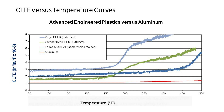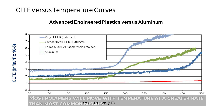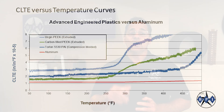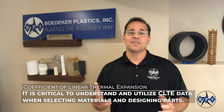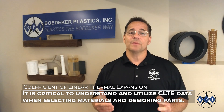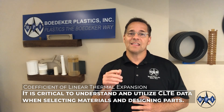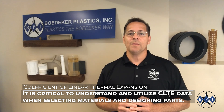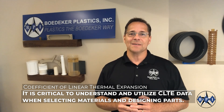What you can learn from this graphic is that most polymers will move with temperature, and that movement is often greater compared to that of most common metals. In order to properly design your plastic components, one has to have an understanding of that movement. The good news is that this material movement is often quite predictable with the right set of data.